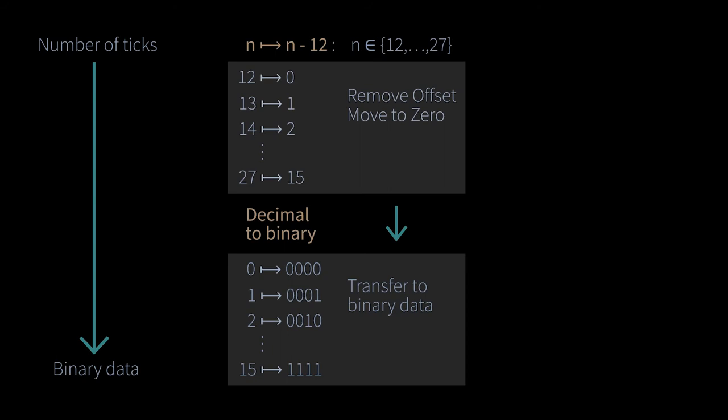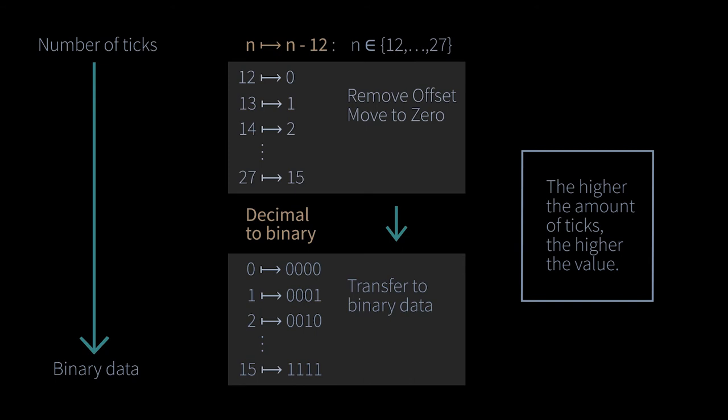Overall, it can be said, the higher the number of ticks, and thus the measured time, the higher the value transmitted. In summary, the method of the SENT signal decoding consists of three steps.